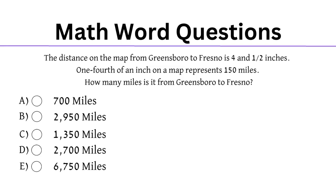Our next question asks us to convert numbers to find the answer. To start, we'll highlight the key parts: 4.5 inches, a quarter of an inch (0.25) equals 150 miles, and we need to find out how many miles it is from Greensboro to Fresno. From a quick glance at the answer options, I can see they are very far apart — and this is great, because it means we don't need to find the exact answer, just estimate to find something close.